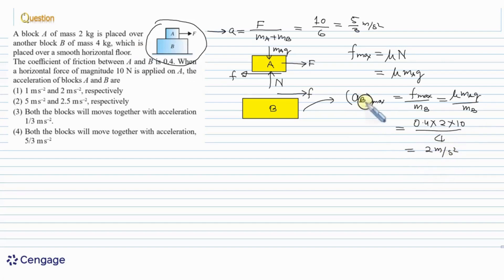And we can observe this maximum possible acceleration of block B is greater than the assumed acceleration in the case system moves together, A equals 5 by 3. That means we can write A is less than A max. Now, we can say our system will move together and this friction will be static in nature. It means common acceleration of the system should be equal to 5 by 3 meter per second square. That means option 4 should be the correct option. Both the blocks move together with common acceleration 5 by 3 meter per second square.